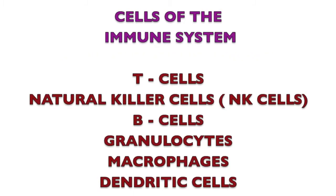The cells of the immune system include T cells, natural killer cells also called NK cells, B cells, granulocytes, macrophages, and dendritic cells.